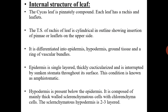This condition of stomata all over the surface is known as amphistomatic — it contains sunken stomata throughout its surface. Epidermis is followed by hypodermis, which is present below the epidermis and is composed mainly of thick-walled sclerenchymatous cells with chlorenchyma cells. The sclerenchymatous hypodermis is 2 to 3 layers thick.